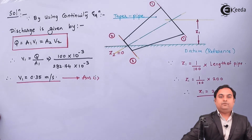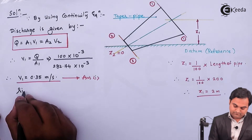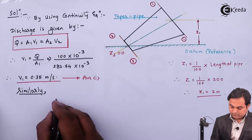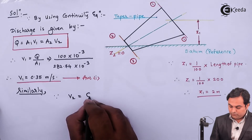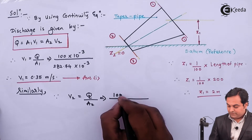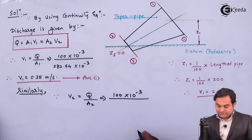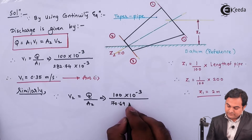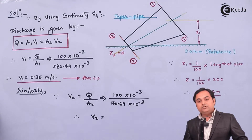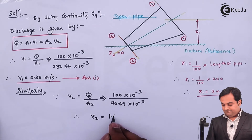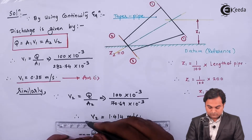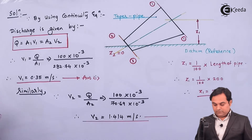Similarly for section 2, v2 = Q / a2 = (100 × 10⁻³) / (70.69 × 10⁻³) = 1.414 m/s. That is the second answer.